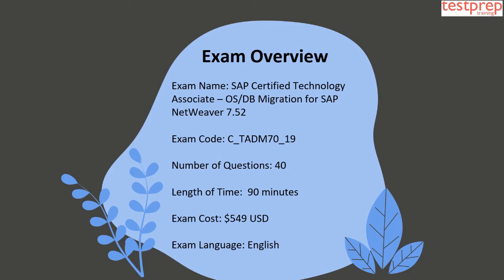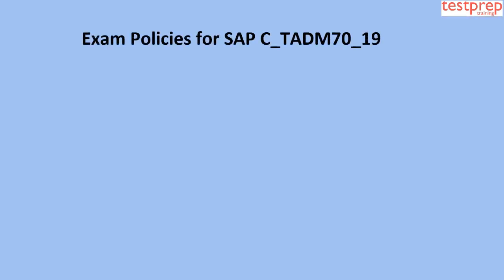Exam Overview: The exam name is SAP Certified Technology Associate OS or DB Migration for SAP NetWeaver 7.52. The exam code is C-DADM-70-19. The number of questions is 40. The length of time is 90 minutes. The exam cost is $549 US dollars, and the exam language is English.